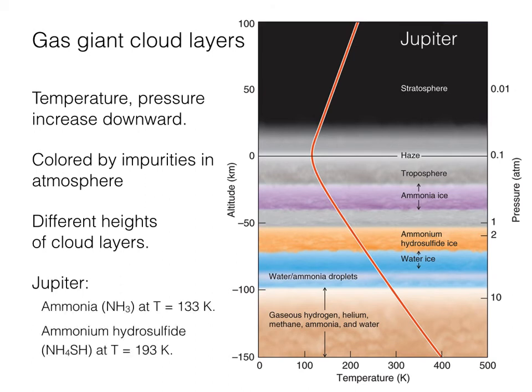The different cloud layers are formed at different heights, at different temperatures and pressures. Here on Jupiter, the bright upper layer clouds are made of ammonia crystals, and they form at a temperature of about 133 Kelvin. Going deeper, the darker lower level clouds are formed from ammonium hydrosulfide, which forms at 193 Kelvin. So you have to get a little bit deeper — where the temperatures are warmer — to start picking up the ammonium hydrosulfide ice. That's when you begin to get those orange-like tawny colors in the cloud tops of Jupiter.